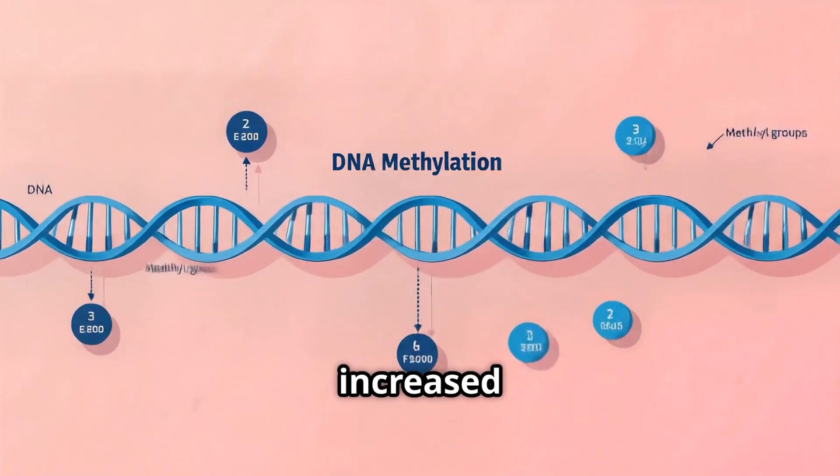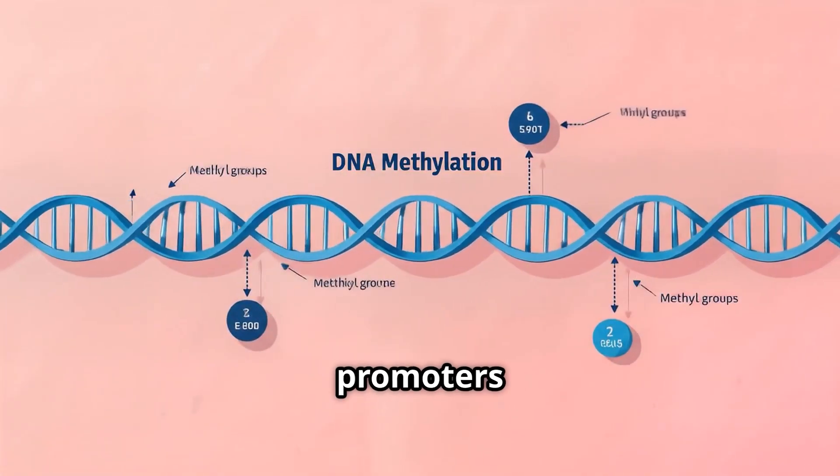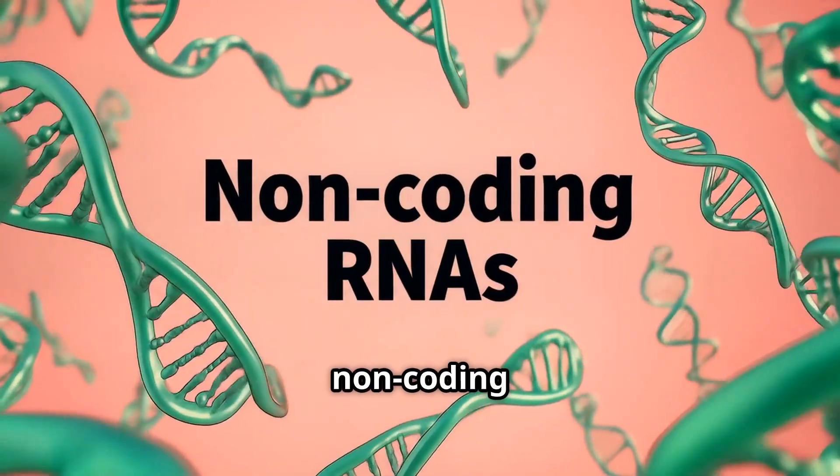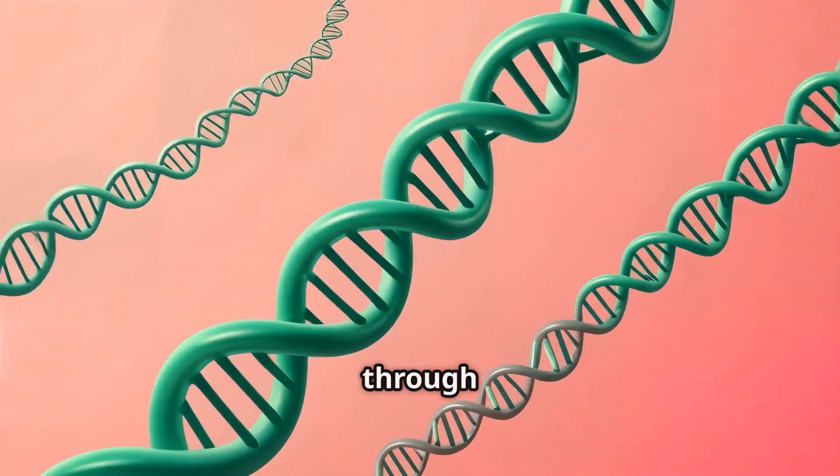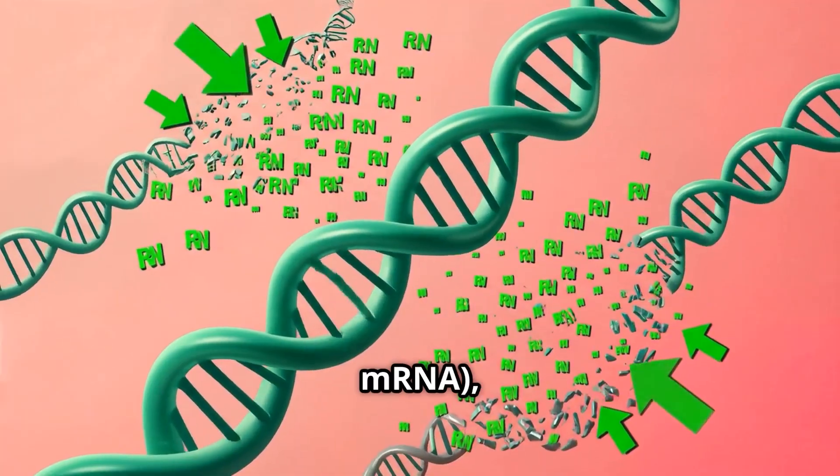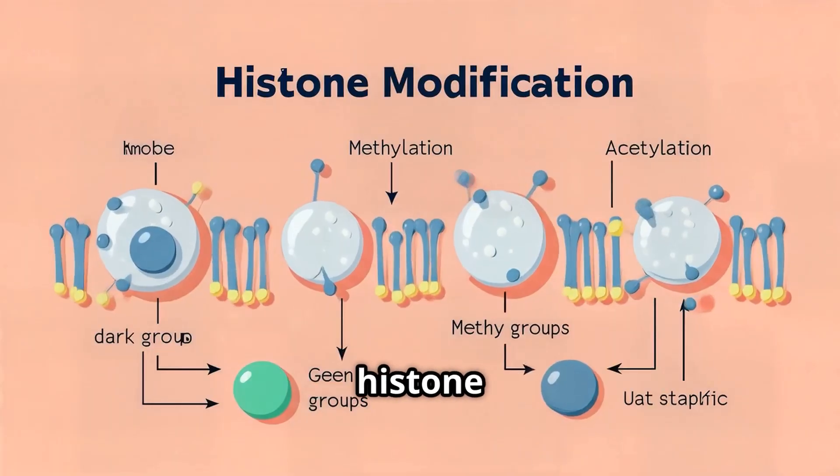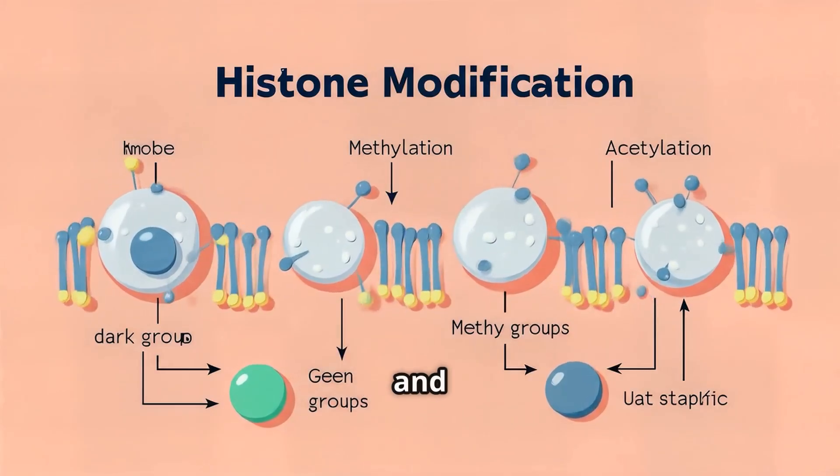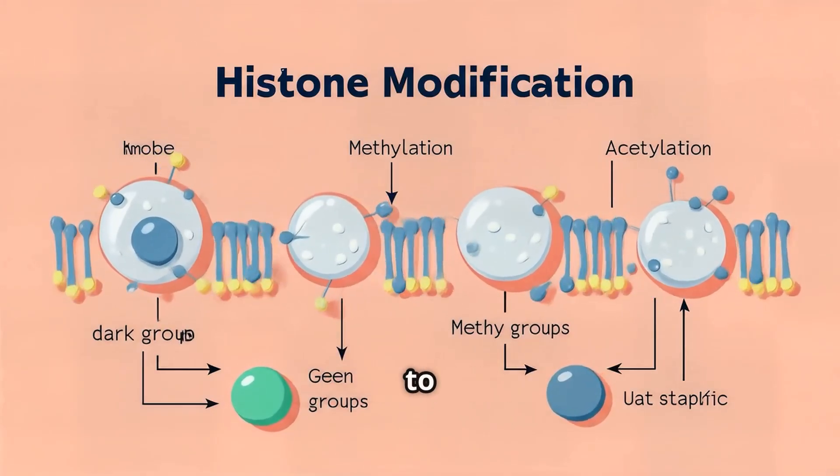In summary, increased DNA methylation at gene promoters causes decreased gene expression. Increased non-coding ncRNA activity reduces gene expression through degradation of messenger RNA (mRNA), while the effect of histone modifications on gene expression is more variable depending on the type and location of substrate attachment to the histone tail.